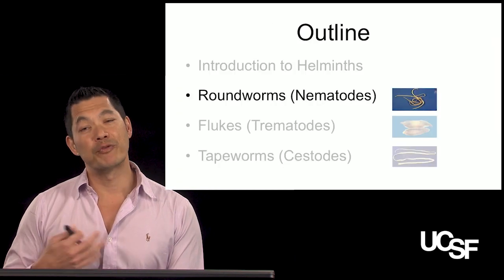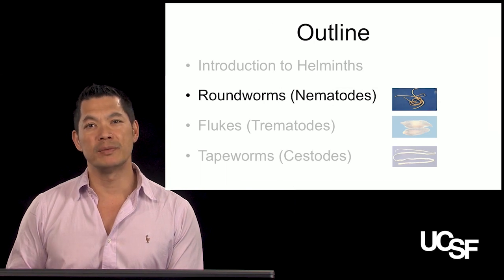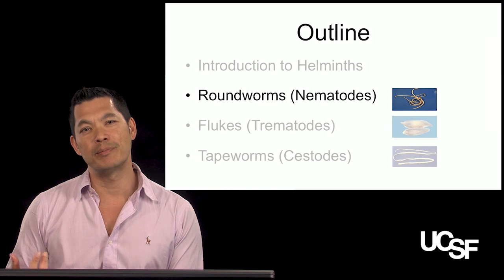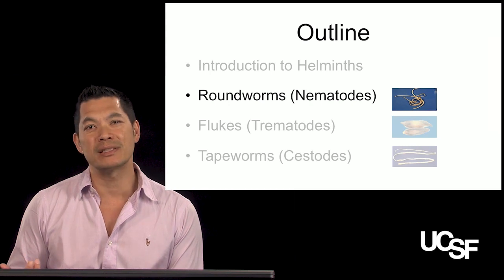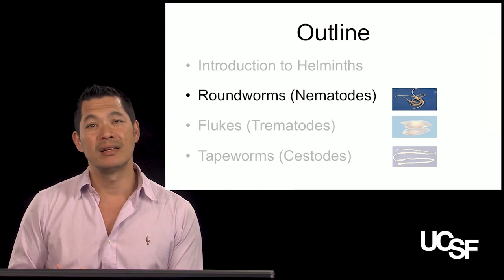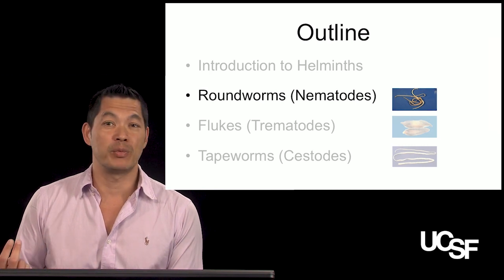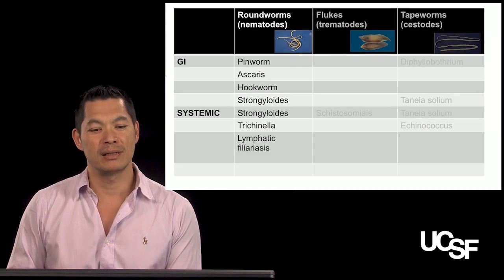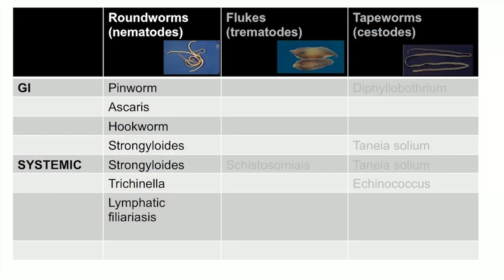Let's start off with roundworms. The other name for roundworms is nematodes. I always find it more interesting to think about them as roundworms because the name is similar to the way they look — like an earthworm essentially. There are a vast number of roundworms we'll talk about in this section.